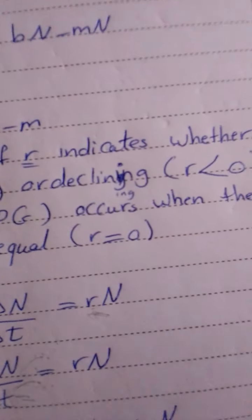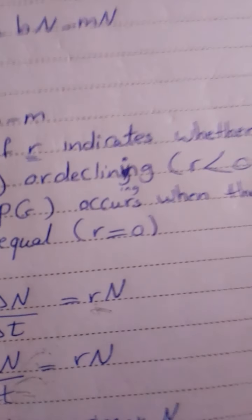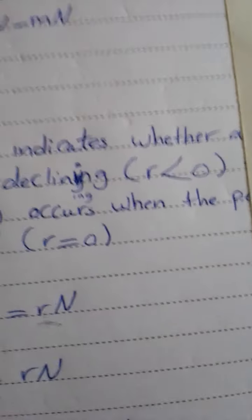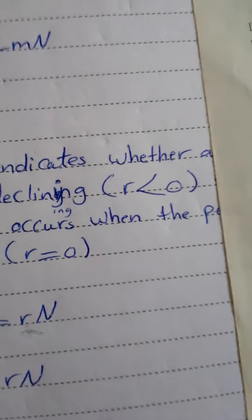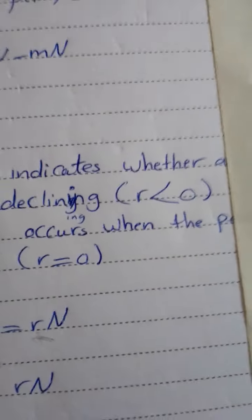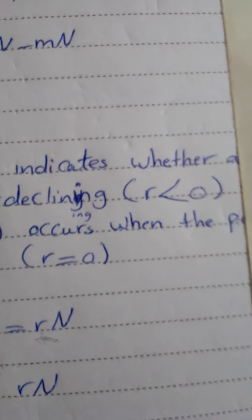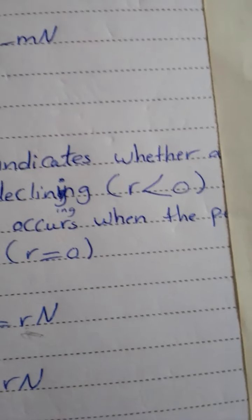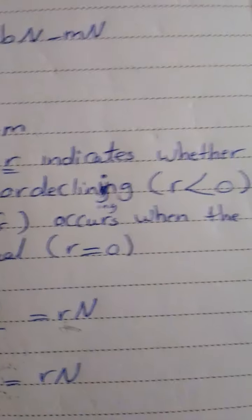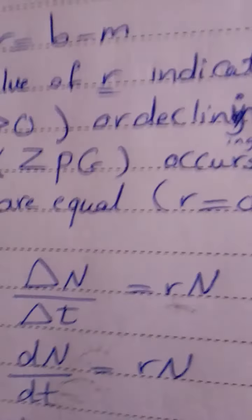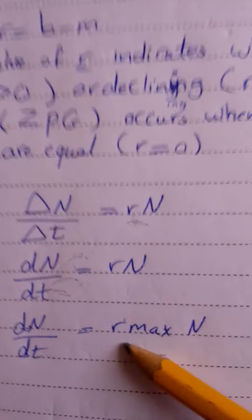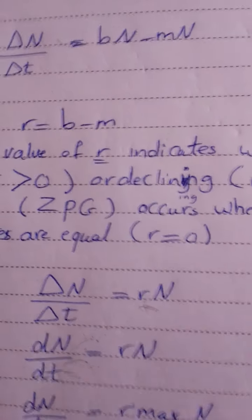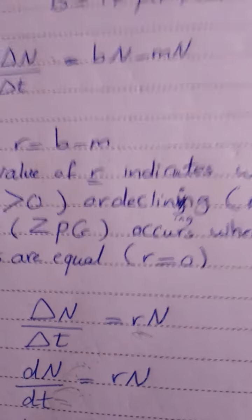Exponential growth. Earlier we described a population whose members have access to abundant food and are free to reproduce at their physiological capacity. Population increase under these ideal conditions is called exponential population growth, also known as geometric population growth. Under these conditions, the per capita rate of increase may assume the maximum rate for the species, called the intrinsic rate of increase, denoted as R max. The equation for exponential population growth is: dN/dT = R max × N. The size of a population that is growing exponentially increases at a constant rate, resulting eventually in a J-shaped growth curve.